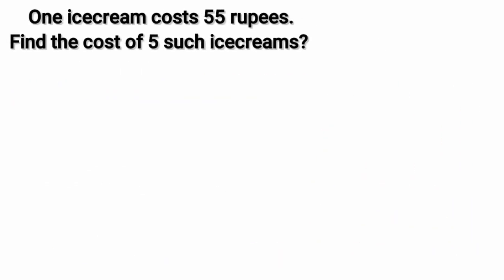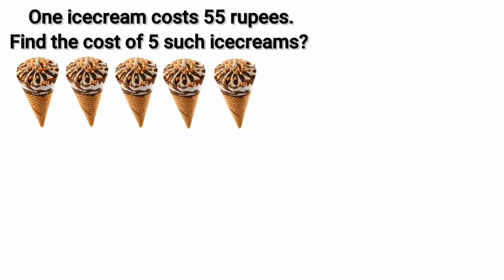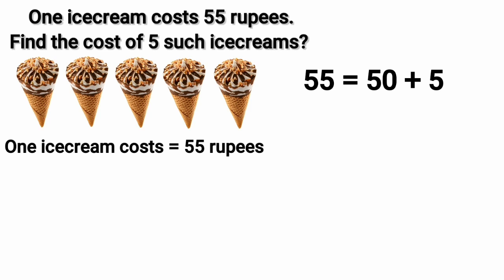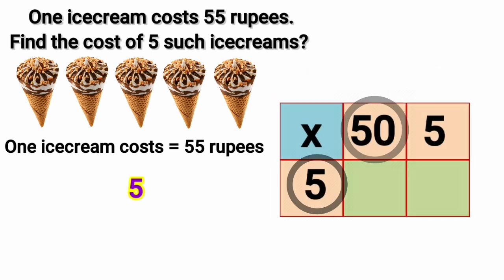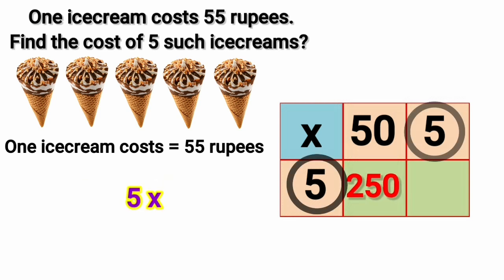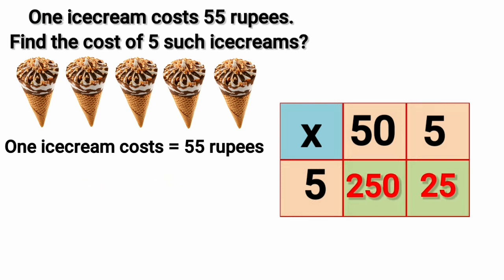Moving to our next question. 1 ice cream costs Rs. 55. Find the cost of 5 such ice creams. 1 ice cream cost is equal to Rs. 55. We will split 55 as 50 plus 5 and write it in a grid. Multiplying 5 and 50 is equal to 250. 5 multiplied by 5 is equal to 25.